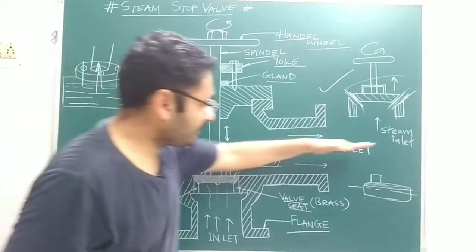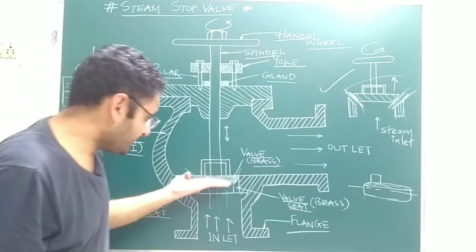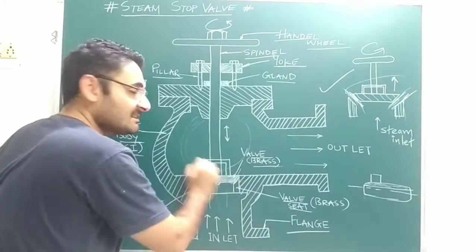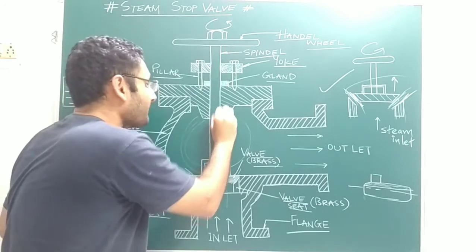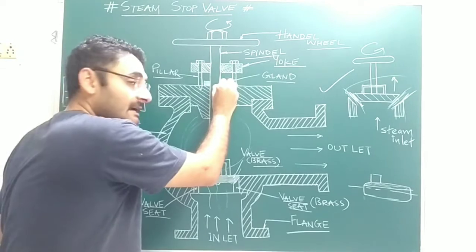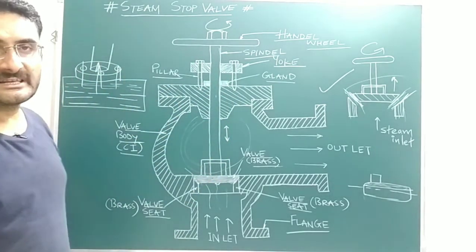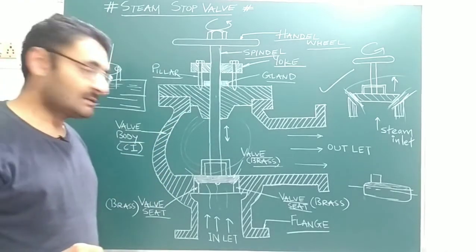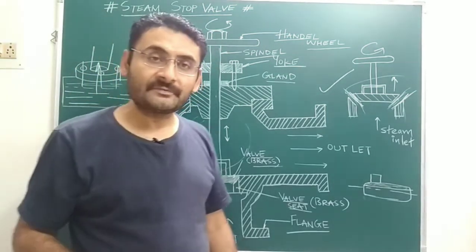From this passage, steam escapes and is delivered to the required places through the outlet. When the valve is open, there is also a minor gap between the body and the spindle through which steam may try to escape. However, the gland prevents this leakage of steam from the steam stop valve, ensuring no steam is lost through the spindle passage.